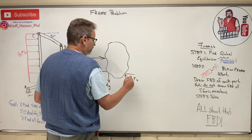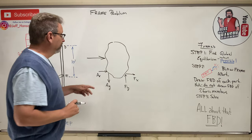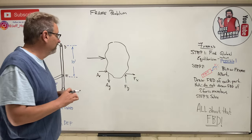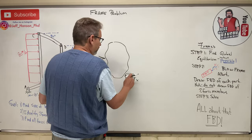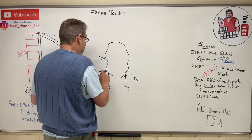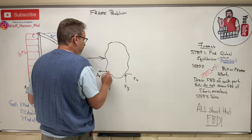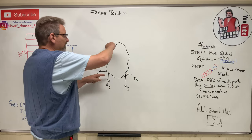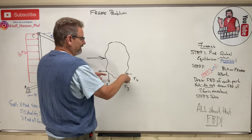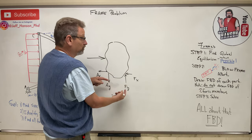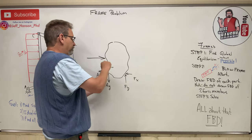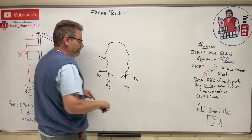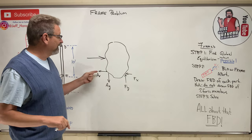I guessed directions for Ax and Fx — I'm not sure those are right. But I do know the frame wants to rock over, so this side gets driven into the ground and the ground pushes back up, while it lifts the other side so the ground has to pull down. So I'm pretty sure about the vertical directions.